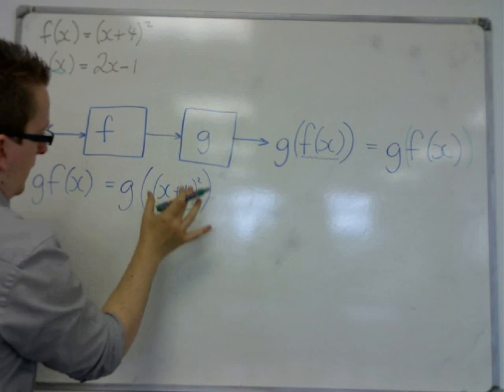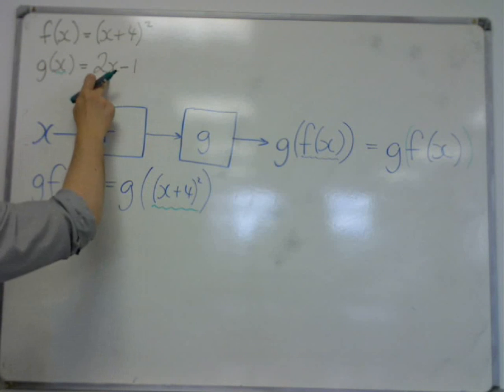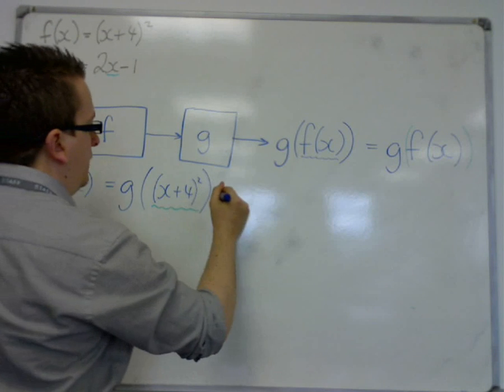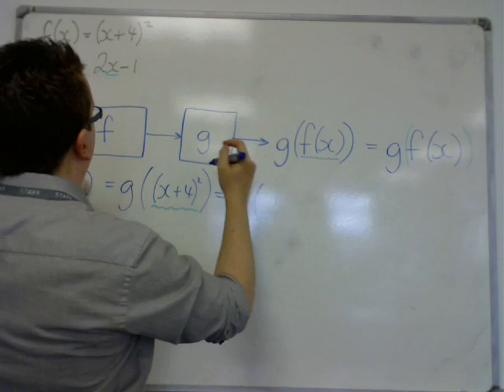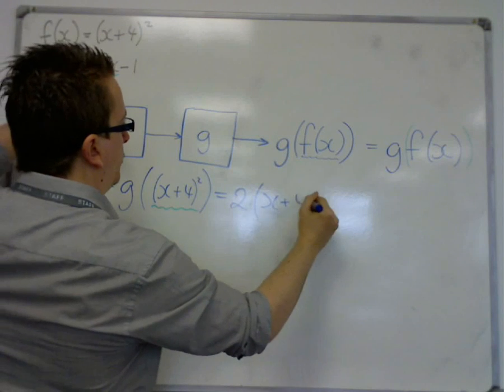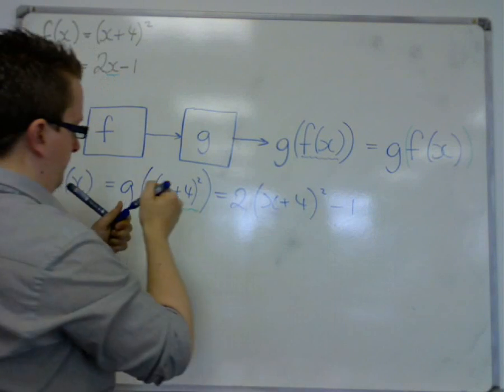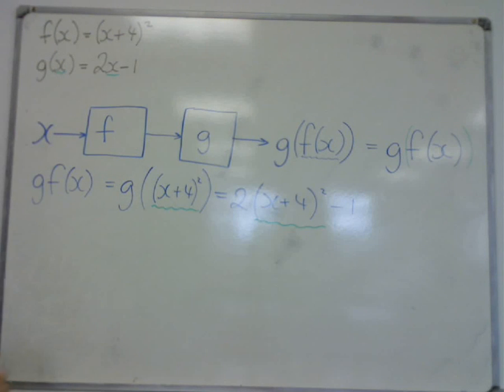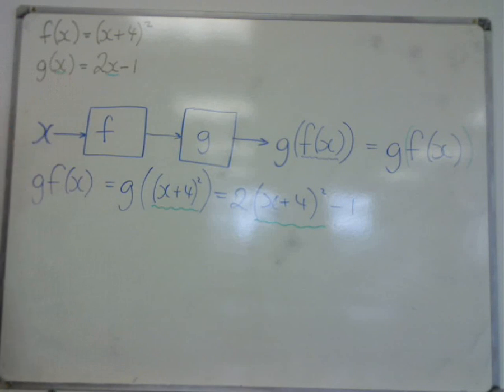So in the same way, the x here must be replaced with x plus 4 squared. So it's two lots of x plus 4 squared minus 1, and that can be my gf of x.